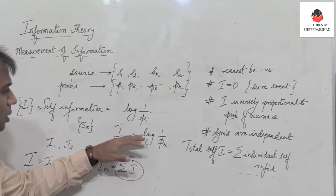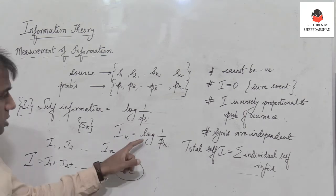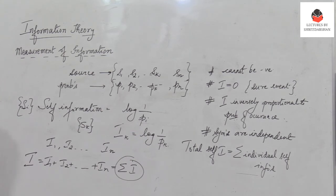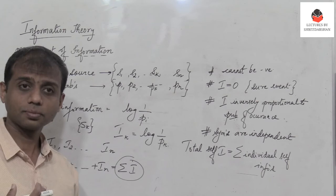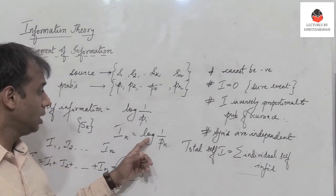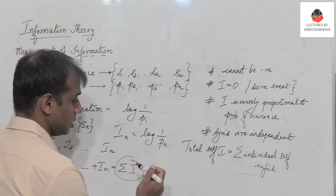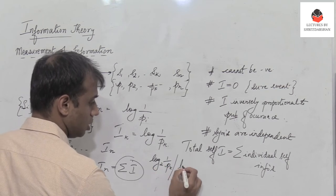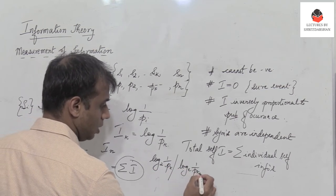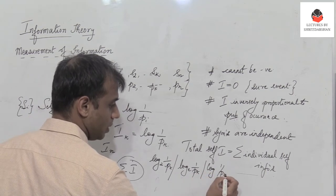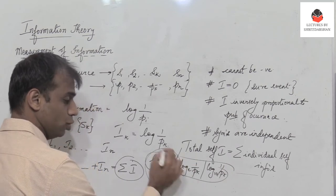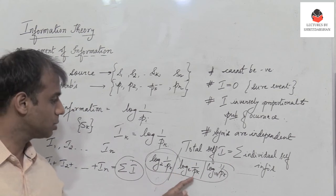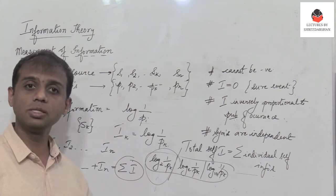In the next video segment, we will see how to actually quantify self-information and what its units are. Should we consider log to base 2, log to base e, or log to base 10? We will explore their advantages, disadvantages, and the relations between them.